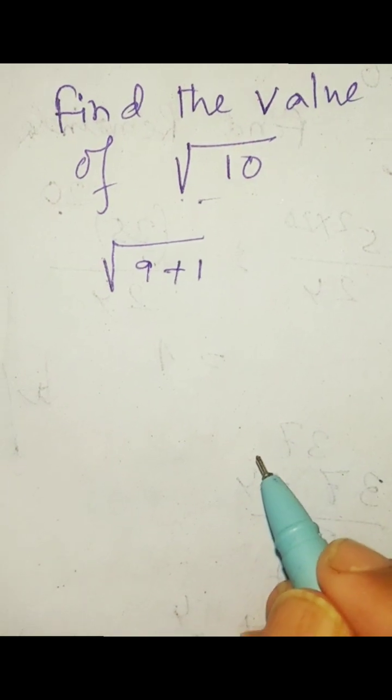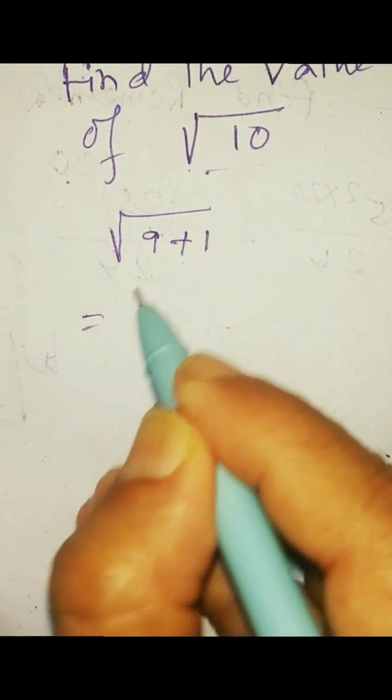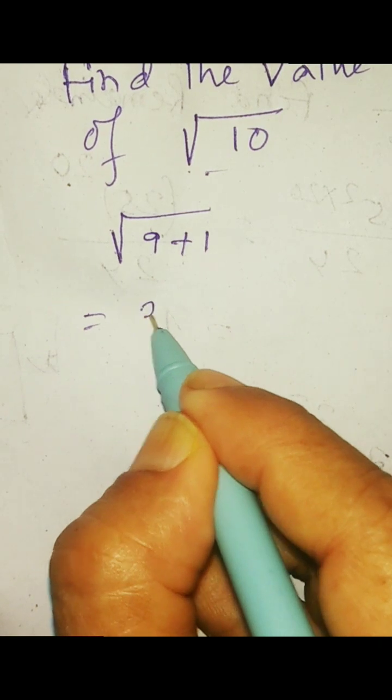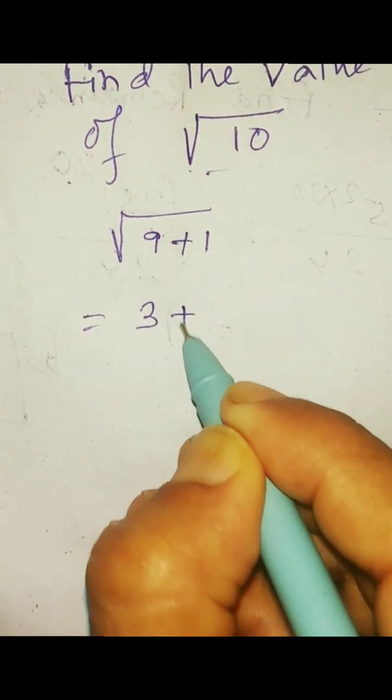9 plus 1, root over 9 plus 1. Now square root of 9 is 3, so we will write 3 here and this plus.